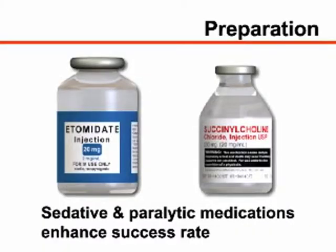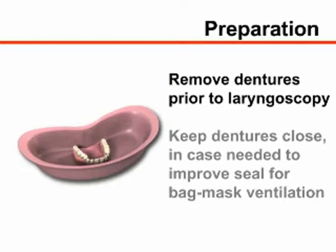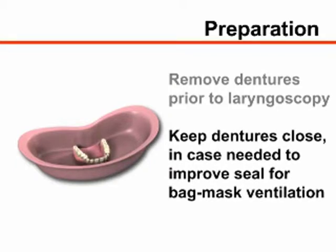The use of sedative and paralytic medications greatly enhances the success rate of endotracheal intubation; however, their use is beyond the scope of this video. Remove the patient's upper and lower dentures, if present, immediately prior to laryngoscopy. Keep the dentures close at hand so that they may be rapidly reinserted to improve the mask seal if bag mask ventilation is required.